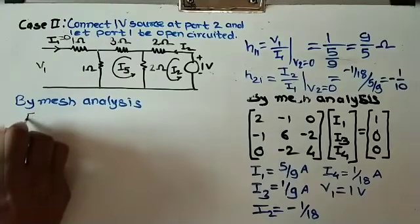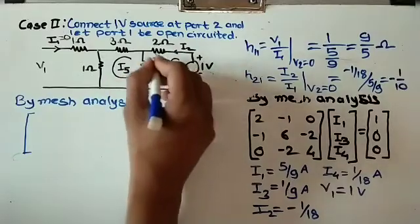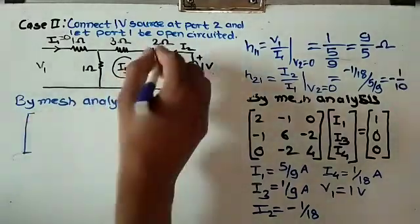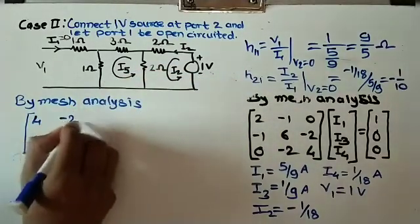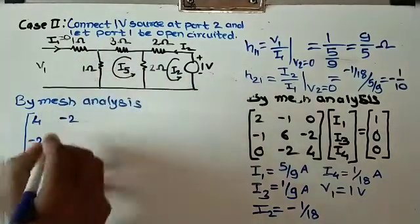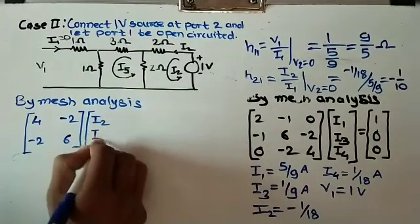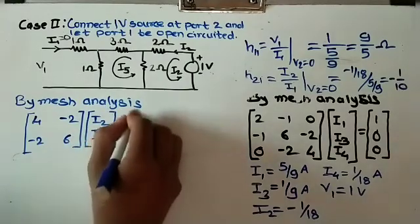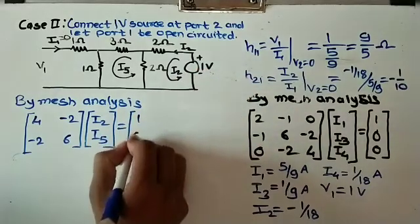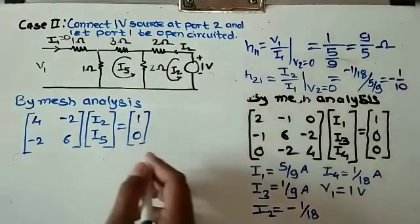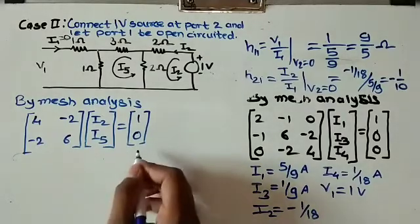With two loops, the mesh matrix is 2×2. Loop 1 total resistance is 4 ohms, shared resistance is minus 2 ohms (repeated for loop 2), and loop 2 total resistance is 6 ohms. Currents are i2 and i5. The voltage column is 1 and 0. We will use Cramer's rule to solve this.